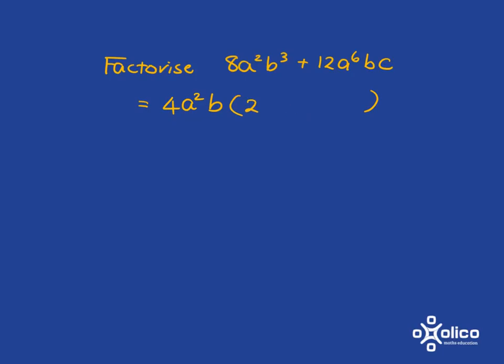a squared times what gets me to a squared? Well, it's just going to be a squared multiplied by 1. But we don't need to actually write the 1 in there because 2 times 1 just gives me 2. And then b multiplied by b squared will get me to b cubed.